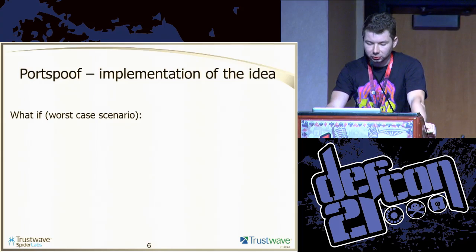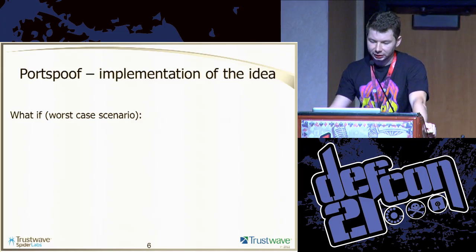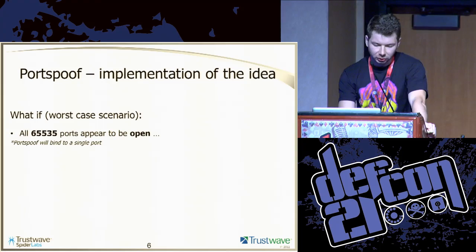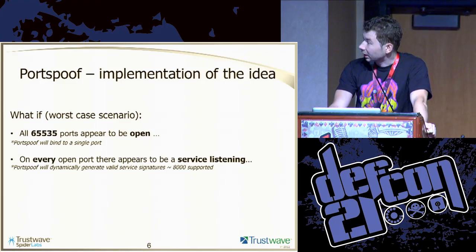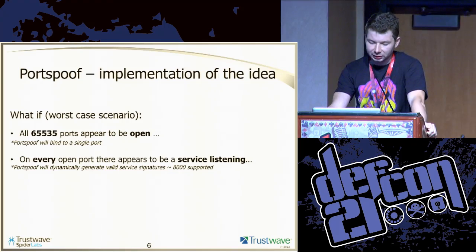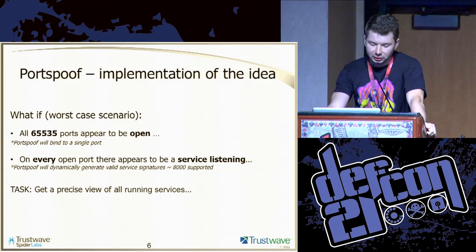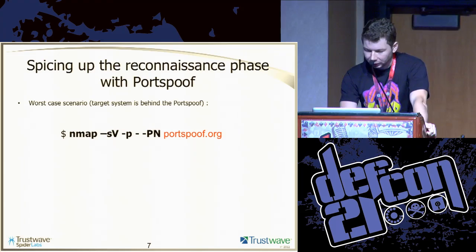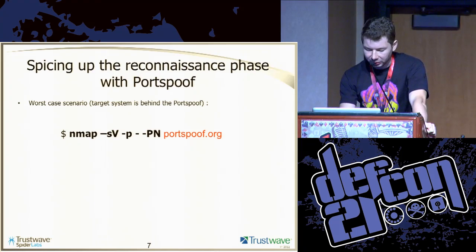I thought: what would be the worst case scenario for a person scanning or trying to get a view of your running services on your system? What if all of the ports were open? And what if on every port there was actually a valid — or appears to be a valid — service listing? The attacker would have to get a view of all running valid services on your remote system. So I wrote this tool, which is a proof of concept and still a work in progress, that basically implements that idea.